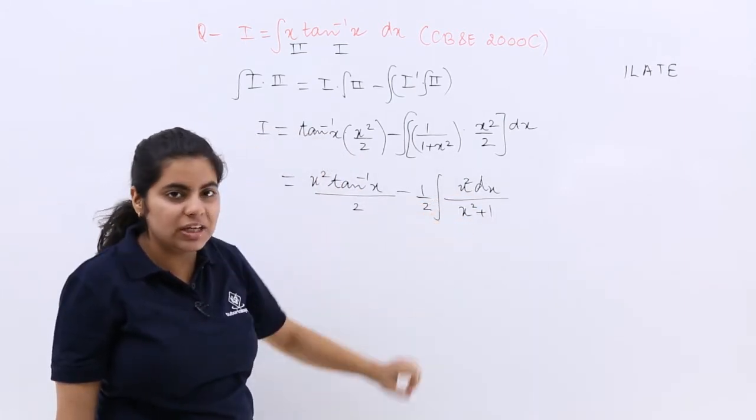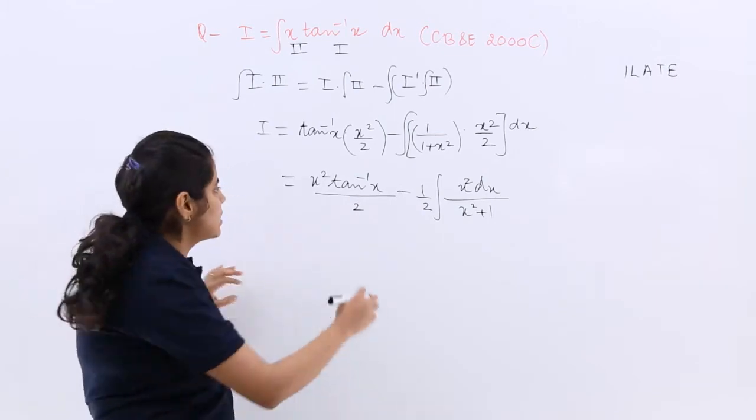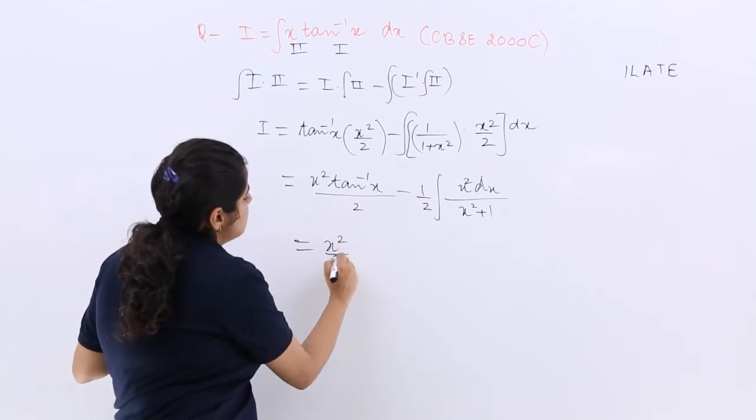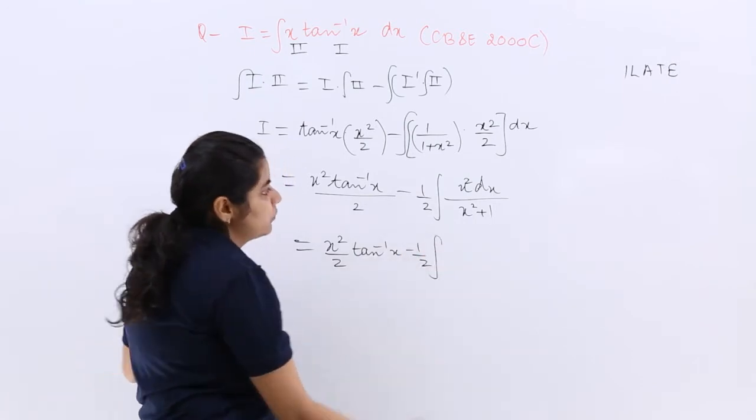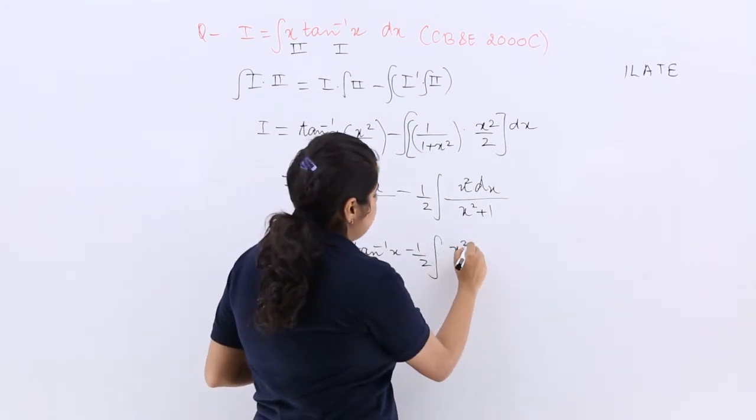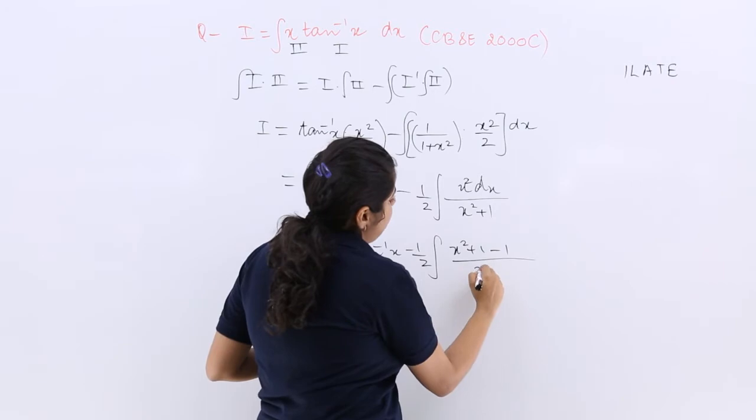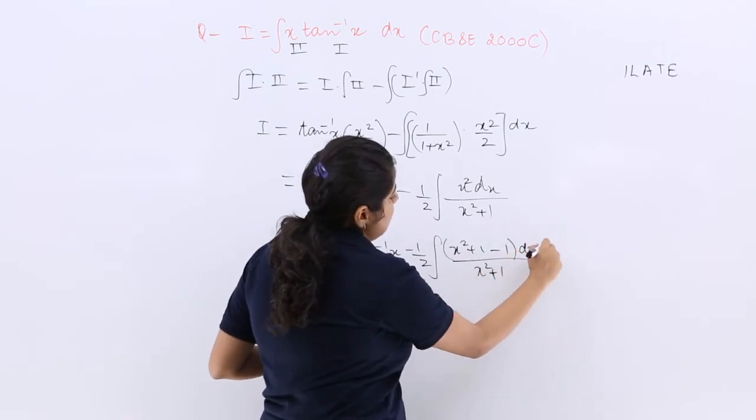x square plus 1 is there. Here it is only x square plus 1 minus 1 can be done. So it is x square by 2 tan inverse x minus 1 by 2, x square plus 1 minus 1 upon x square plus 1 dx.